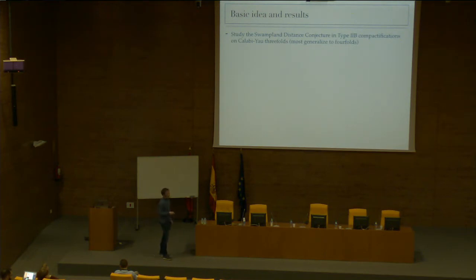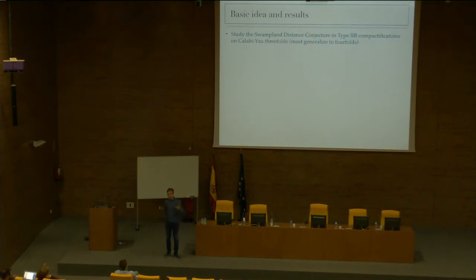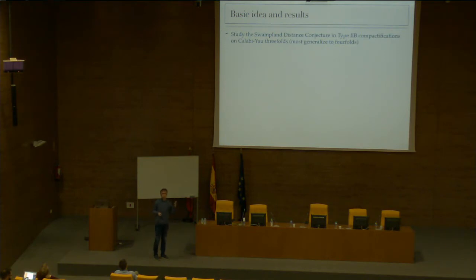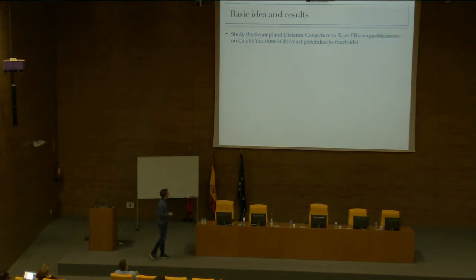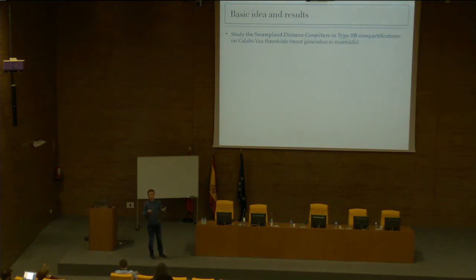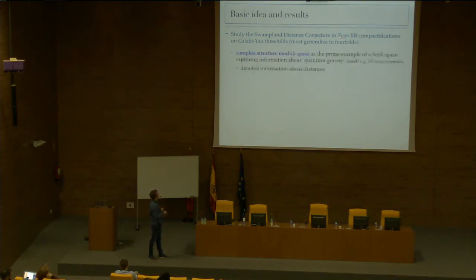So what is the idea? Instead of looking at some very specific example, let's try to find some example where we have learned a lot in the last 20-30 years — where we have really strong mathematical tools and also a deep physical understanding. That's why we picked type 2B compactification, or F-theory compactification. At the moment, most of the discussion in our paper is on Calabi-Yau threefolds, but the mathematical results equally hold for Calabi-Yau fourfolds, K3, or many other spaces. So we want to study this distance conjecture in type 2B compactification on Calabi-Yau threefolds.